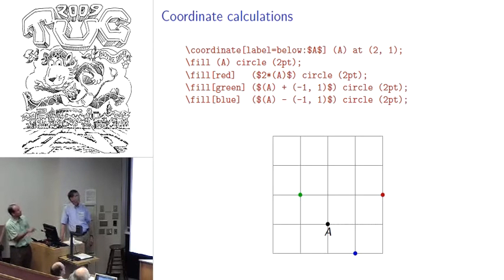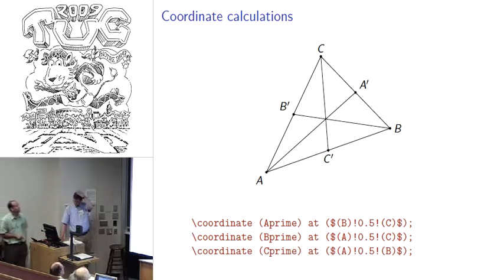Here's a simple example. We're just going to create a coordinate here called A. Put a dot there. Then we're going to create some other circles. Inside of this coordinate, we're putting the dollar signs to indicate that we're doing coordinate calculation. Then we just do two times A, so that's going to essentially do a scalar multiplication. Then you can also add and subtract other coordinates. These could have been named coordinates or just given explicitly. So we can do a little translation here as well.